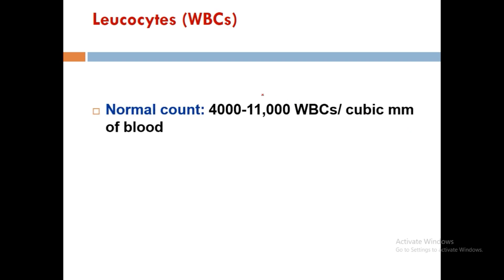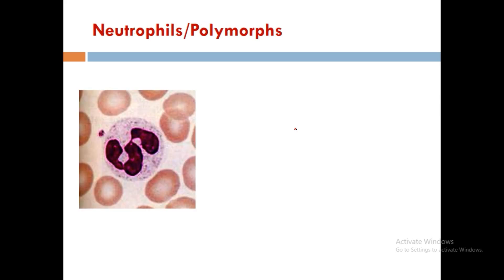The normal count of WBC is 4,000 to 11,000 WBCs per cubic mm of blood. Now we will look at the identification points and characteristic markers of the different types of WBC. First, the neutrophils or polymorphs, which are the largest in concentration compared to other WBCs, at around 60 to 70 percentage.